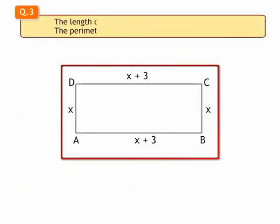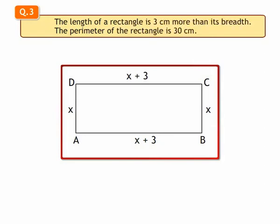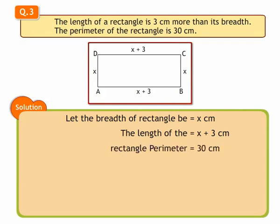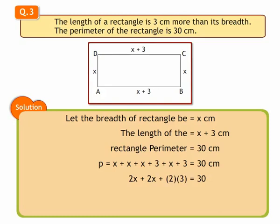3. The length of a rectangle is 3 cm more than its breadth. The perimeter of the rectangle is 30 cm. Let us take the breadth of the rectangle as x cm. Hence, the length will be x plus 3 cm. The perimeter of the rectangle is given as 30 cm. Therefore, we can write perimeter of a rectangle is equal to x plus x plus x plus 3 plus x plus 3 which is equal to 30 cm. We get 2x plus 2 into 3 is equal to 30. Hence, we get an equation: 2 into x plus x plus 3 is equal to 30.